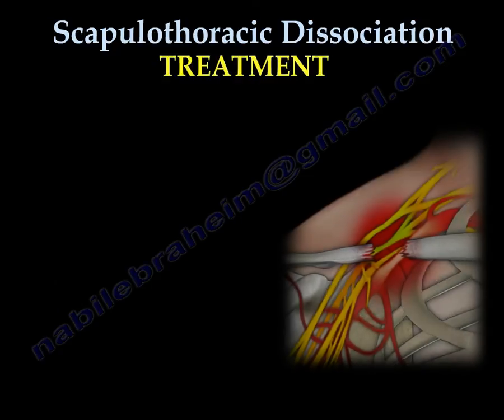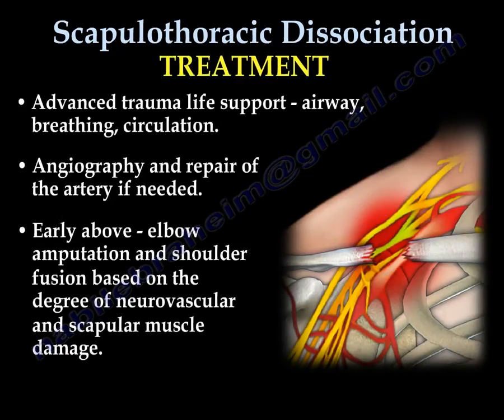The treatment usually starts with advanced trauma life support — airway, breathing, circulation. We do angiography and repair of the artery if needed. Early above-elbow amputation and shoulder fusion is based on the degree of the neurovascular and the scapular muscle damage.